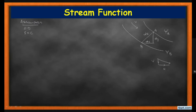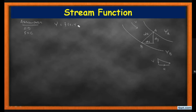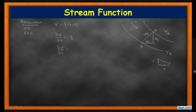The stream function can be defined in two different ways. First, it is a mathematical function of x, y, and time — generally written as f(x, y). If you differentiate with respect to x, it gives the velocity in the y-direction; if you differentiate with respect to y, it gives the velocity in the x-direction. The second definition is that the stream function is the discharge per unit thickness of a flow.